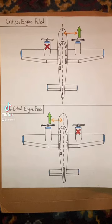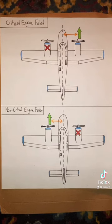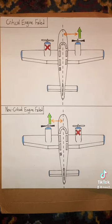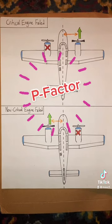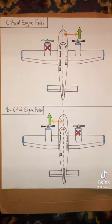In multi-engine propeller airplanes with propellers that rotate in the same direction — normally clockwise as seen from behind — the right-hand descending blade produces more thrust than the left-hand ascending blade. This is called p-factor, and you can learn more about it in one of my previous videos. The result is that the total thrust from the propeller is not centered in the middle of the propeller, but rather is somewhat offset to the right.